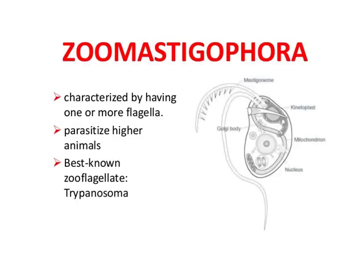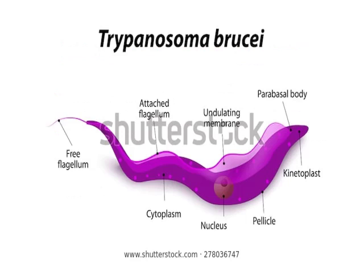Zoomastigophora are animals that have flagella and parasitize higher animals. The best-known flagellate is Trypanosoma. Here is Trypanosoma brucei — a cytoplasmic animal with a free flagellum and an attached flagellum, so there are two flagella.